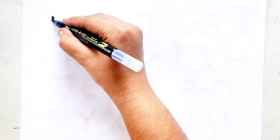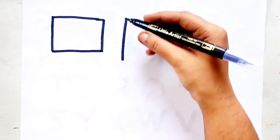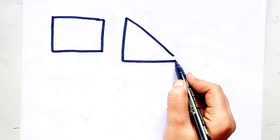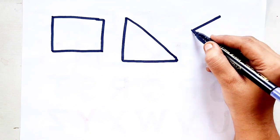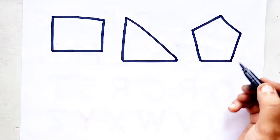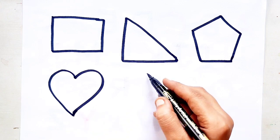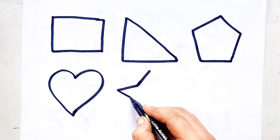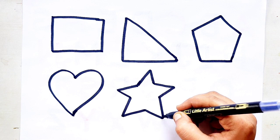Let's learn to draw some 2D shapes. Rectangle. Right side triangle. Pentagon. Heart. Star.